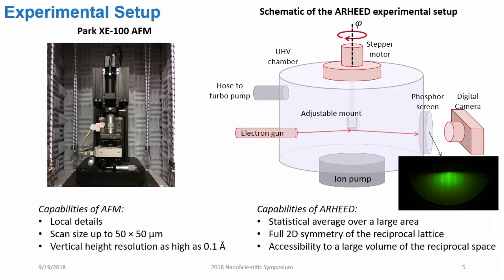The advantage of rotating the sample during measurement is that we can have accessibility to a large volume of the reciprocal space.